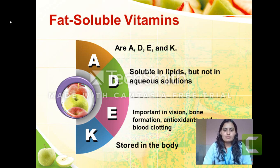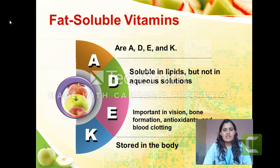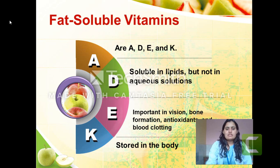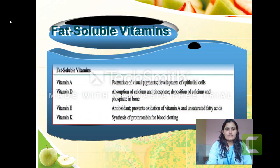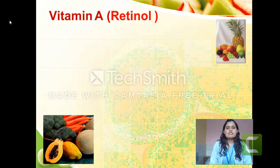Fat-soluble vitamins are stored in our body — once consumed, there will be some stores maintained. Opposite to that, water-soluble vitamins are mainly excreted by the kidneys and other routes; they are not stored in our body. Now we will start fat-soluble vitamins one by one. First is vitamin A.